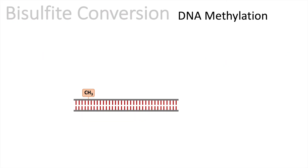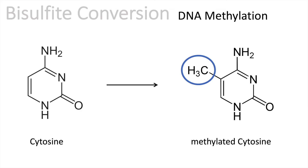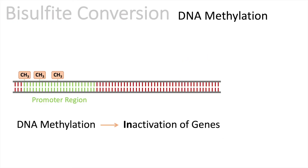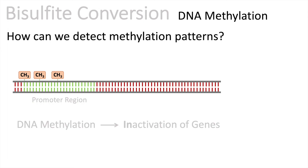DNA methylation is one of the most abundant phenomena in epigenetics. In most animals, DNA methylation occurs on a cytosine — so cytosines can be methylated. Here we show a gene sequence. In green we have the promoter region, and we can see that in the promoter region there is DNA methylation, meaning cytosines in this region are methylated. This usually leads to the inactivation of genes, so genes are not transcribed anymore. But how can we detect these methylation patterns?